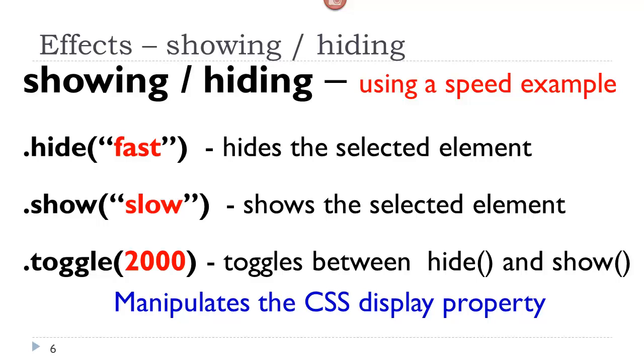There are three effects or effect methods that concern showing and hiding. .hide, .show, and .toggle. And notice I have values for all three of these methods. We have already looked at hide and show in the previous class. And that pretty much allows something to appear and then to disappear.